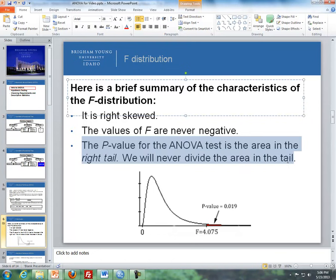The P value for the ANOVA test is the area in the right tail. We never divide the area in the tail. We could do a one-sided or two-sided test with T tests or Z scores, but here it's always a right tail or right-sided test.